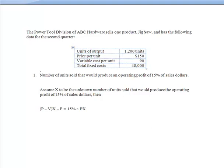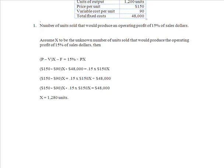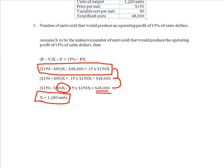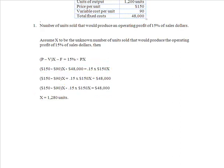I'm going to plug in what I know and solve for X. I've shown you all my steps. This is where I originally substituted into my formula. Then I've gone through the algebra steps to solve that equation by getting X isolated on one side of the equation and $48,000 isolated on the other. And it tells me that at 1,280 units I will produce an operating profit of 15% of sales dollars.